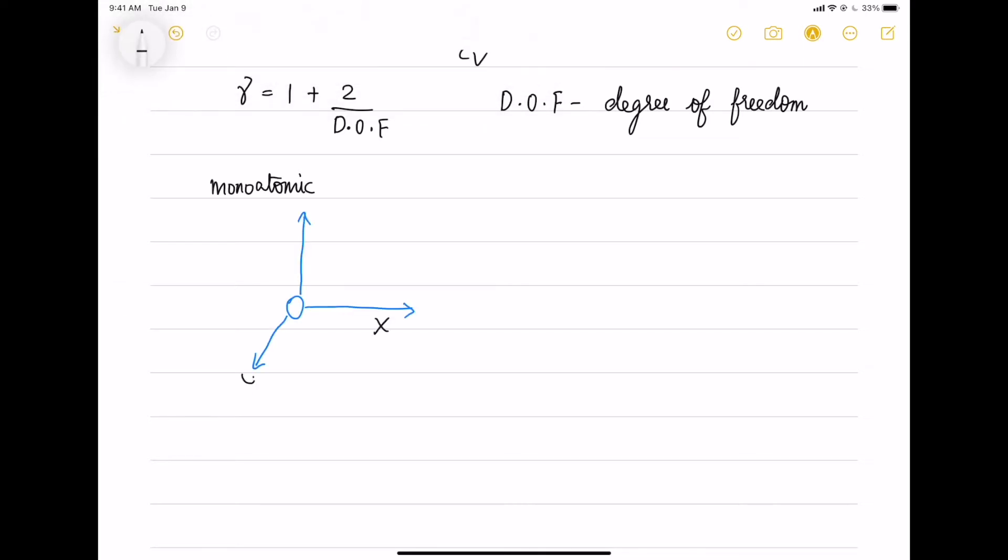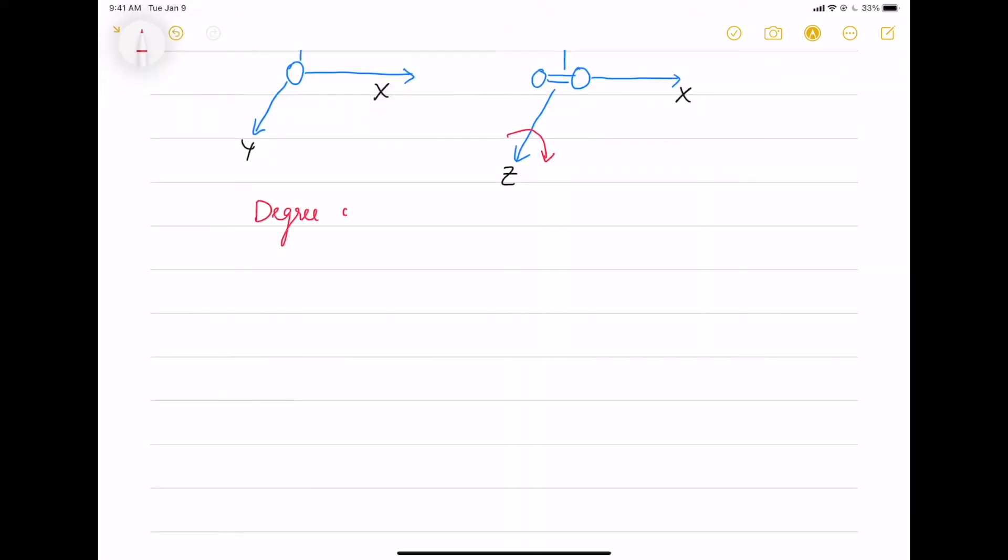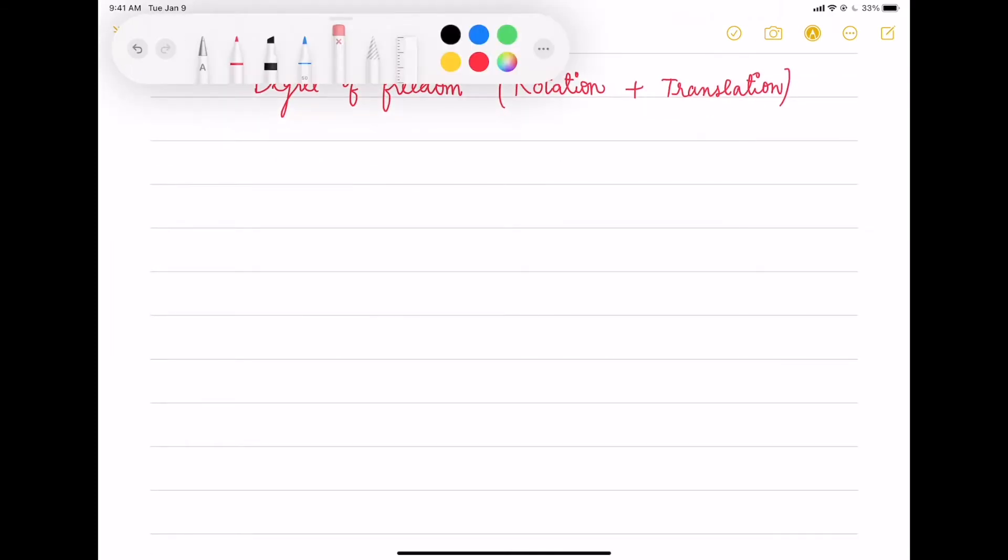If you take a monoatomic gas which is one atom, and if you take a diatomic gas which has two atoms which are bonded together, you will have rotation in Z and Y directions. The degree of freedom contains rotation plus translation motion.